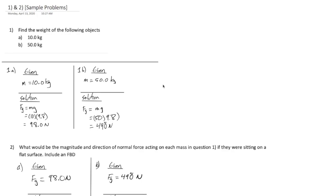First, sample problem number one. We're asked to find the weight of the following objects. Again, a reminder, weight and mass are not the same thing. In part A, our object has a mass of 10 kilograms. To find the weight, it's simply using the formula FG equals MG. Simply enough, 10 kilograms times 9.8, that works out to 98.0 newtons.